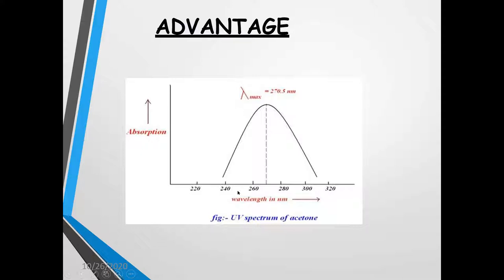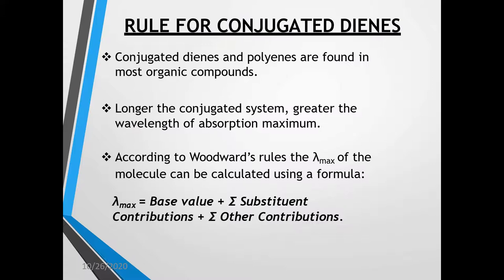For example, here is the UV spectra of acetone where the lambda max observed is around 270.5 nanometers. This is the experimental value and the nearby value is calculated based on the Woodward-Fieser rule. According to this rule, the conjugated diene system or polyenes are found in most organic molecules, and the lambda max is calculated by addition of base value plus the substituent contributions and other contributions like solvent effects. The sum of these values is taken as lambda max for that particular compound.